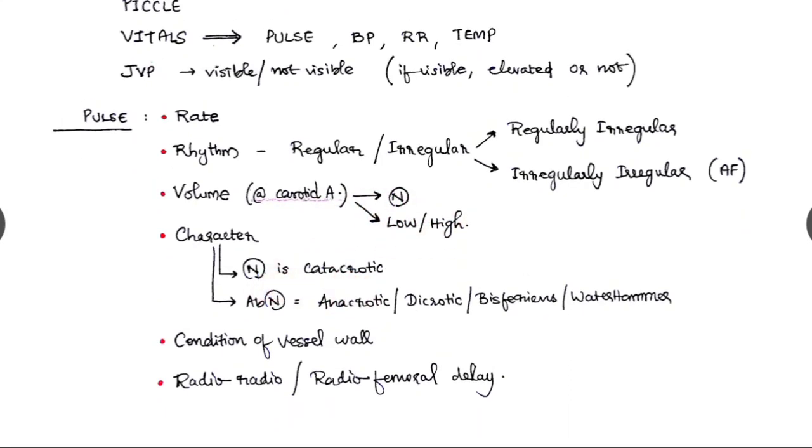And character we have to define whether it is a normal character. The normal character is catacrotic, or if there is an abnormality like anacrotic, dicrotic, pulsus bisferiens, or water hammer pulsation. The condition of the vessel wall we have to tell whether it is thickened or normal.